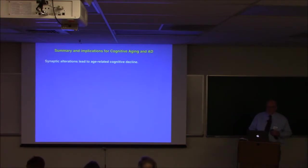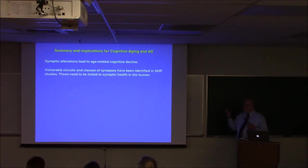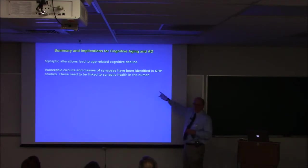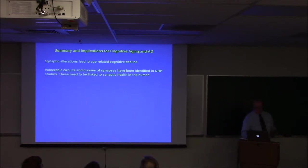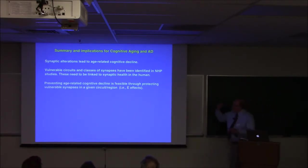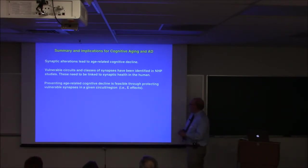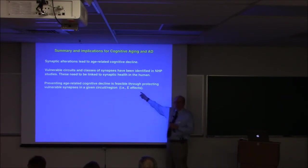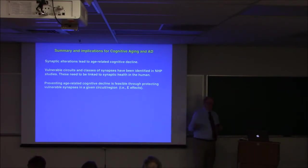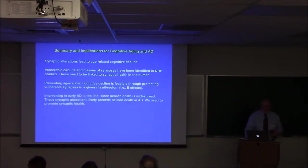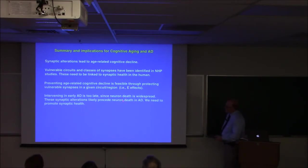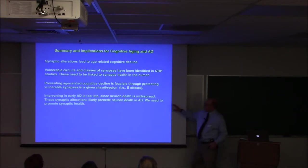So, we know synaptic alterations lead to age-related cognitive decline. We've been able to identify in non-human primate studies, vulnerable circuits and synapses. But we need to be able to link those to synaptic health in the human. So, we need to know when you do imaging in the human, how does that imaging, how do those imaging data reflect what's happening at the synaptic level? We don't know that yet. And the monkey would be an important model to figure that out. We know we can, this is maybe the most important point of the whole talk. We know that we can protect vulnerable synapses. We know that from our estradiol data. We don't know yet what else we can use to protect those vulnerable synapses. But I'm sure we can tap into that same signal. And I've already said this. Intervening in early Alzheimer's is too late. The neuron death is already widespread. These synaptic alterations likely precede the neuron death. So, you really have to preserve and promote synaptic health.